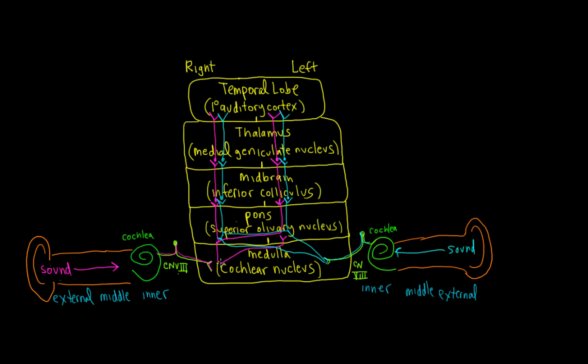We also have crossing once we get up into the pons, called the trapezoid body. Another important point is that we have bilateral representation, with the superior olivary nucleus in the pons.